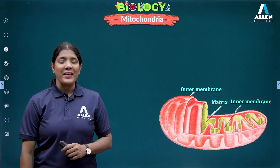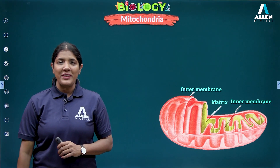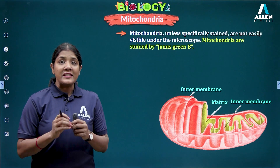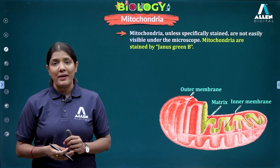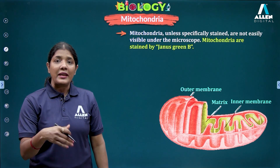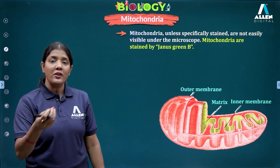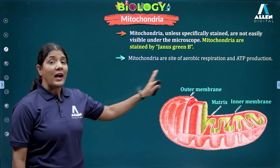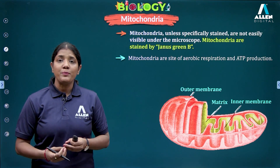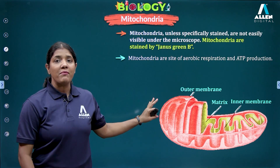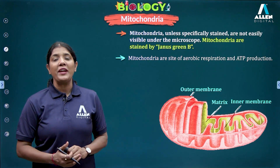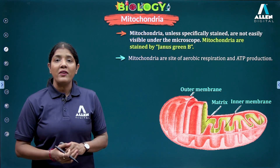Welcome to Island Digital. In today's lecture we will be learning about one of the double membranous cell organelles — mitochondria. Unless you stain it with a specific stain, you will not be able to view it under a microscope. The stain used is called Janus Green B. Mitochondria are the site of aerobic respiration and ATP production, so we call mitochondria the powerhouse of the cell.